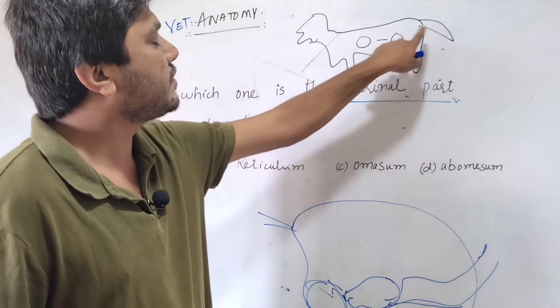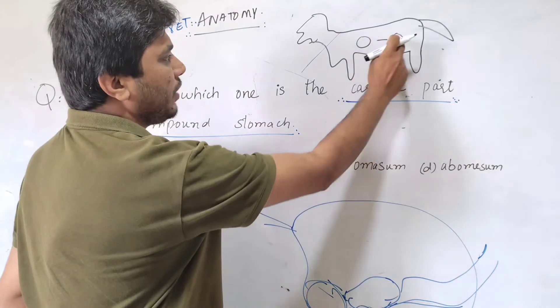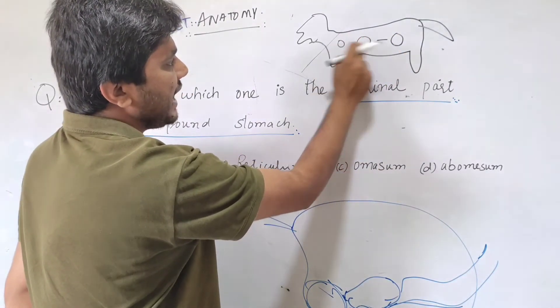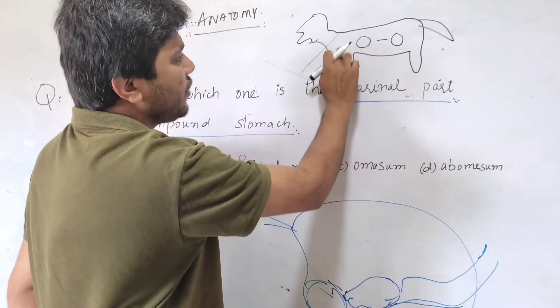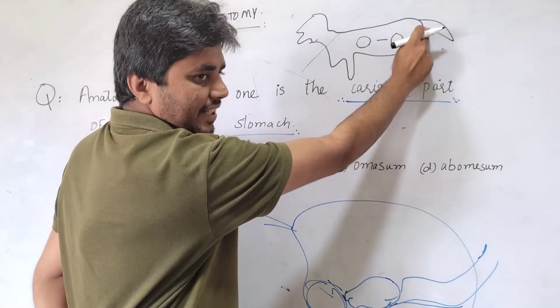This organ is toward the tail, so this will be known as caudal. If you compare both of them, if there is another organ here, this will be the cranial and this will be the caudal. This depends which organ you are comparing.